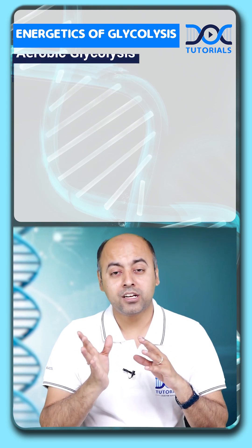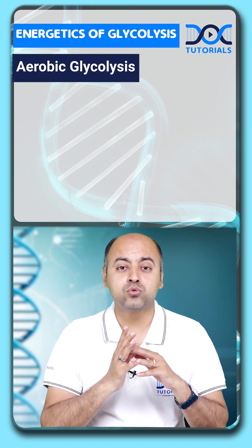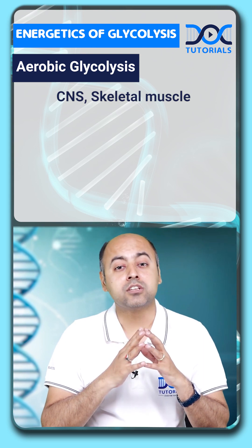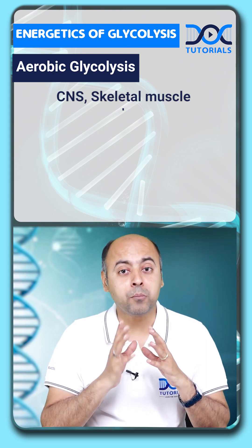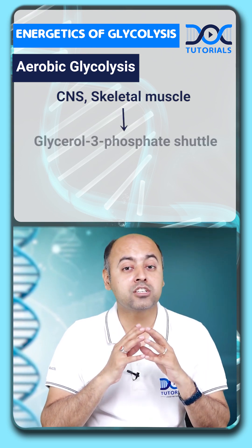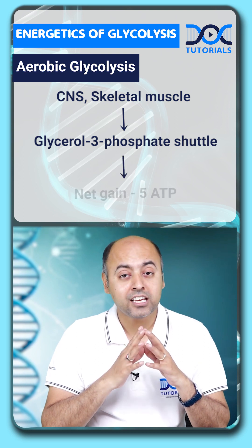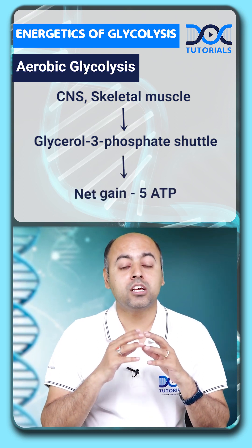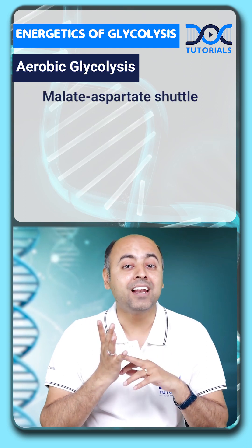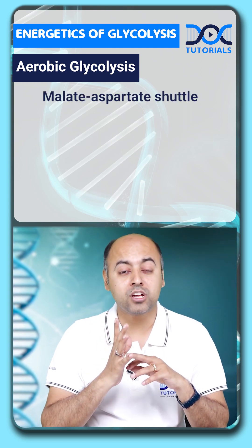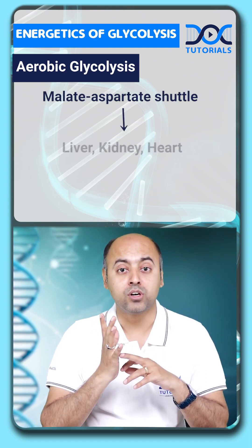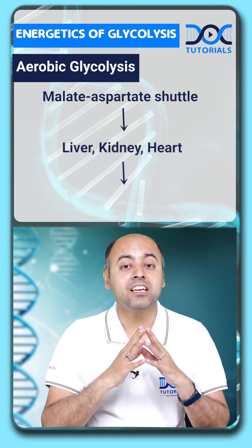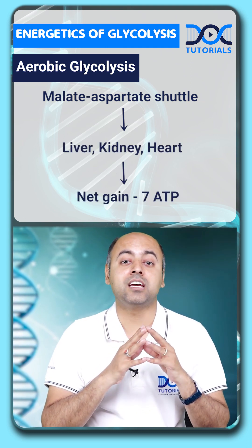Going to the aerobic glycolysis, in certain tissues like the CNS and the skeletal muscle, where the main shuttle is the glycerol-3-phosphate shuttle, the net gain of ATP is 5 ATP. But on the other hand, in tissues where the malate-aspartate shuttle is the more important shuttle — like the liver, the kidney, and the heart — the net gain will be 7 ATP.